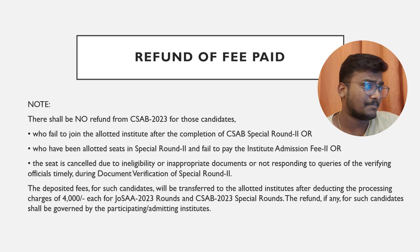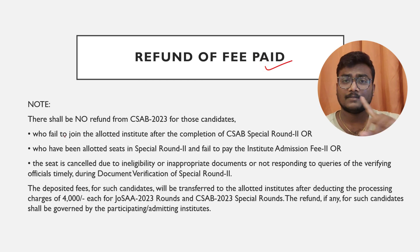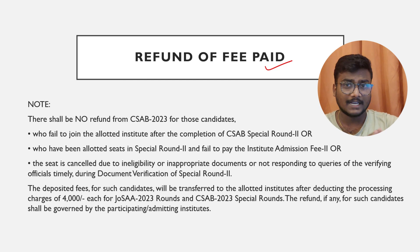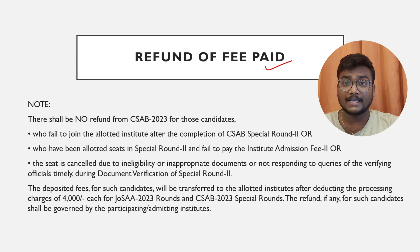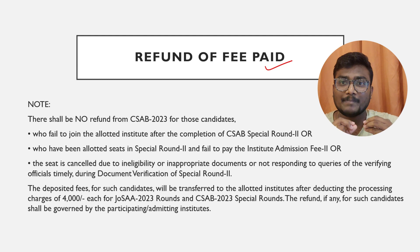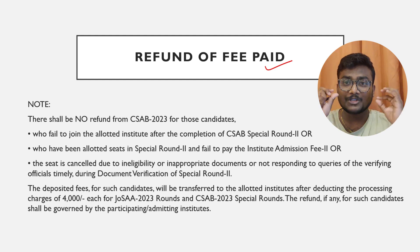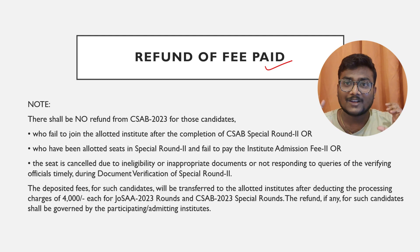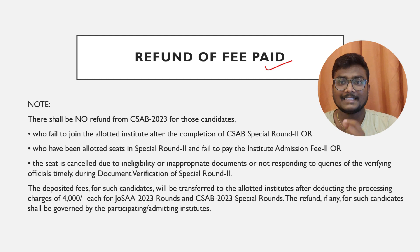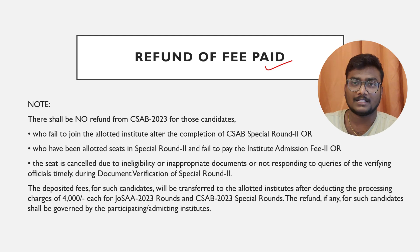Regarding refunds: if you withdraw your seat in Round 1 of CSAB, you will get your money back. If you don't get any seat in any round, you will get your money back. However, once you receive a Round 2 allotment, you must complete the full process — pay institute admission fee, submit documents properly. If after Round 2 allotment you don't join that college, the refund is entirely at the discretion of that particular college.